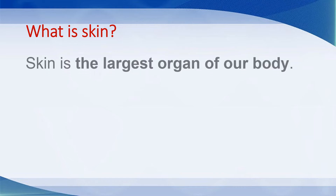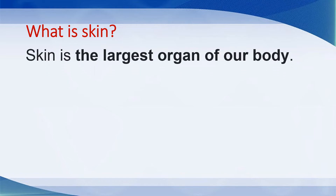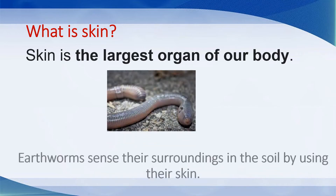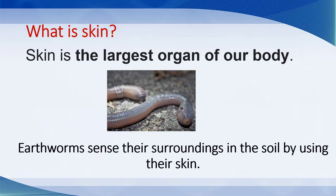Next, what is skin? Skin is the largest organ of our body. For us humans, skin is the largest organ because it covers all the parts of our body. But for animals like the earthworm, they use their skin to sense their surroundings. Earthworms sense their surroundings in the soil by using their skin.